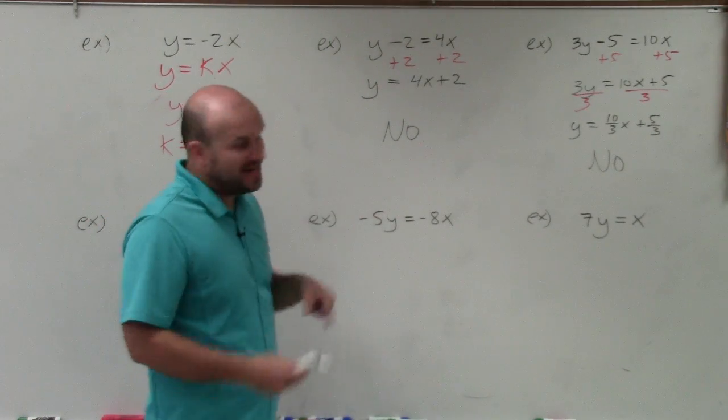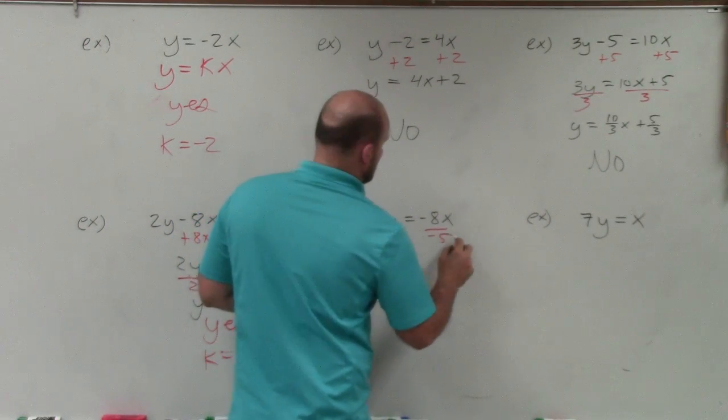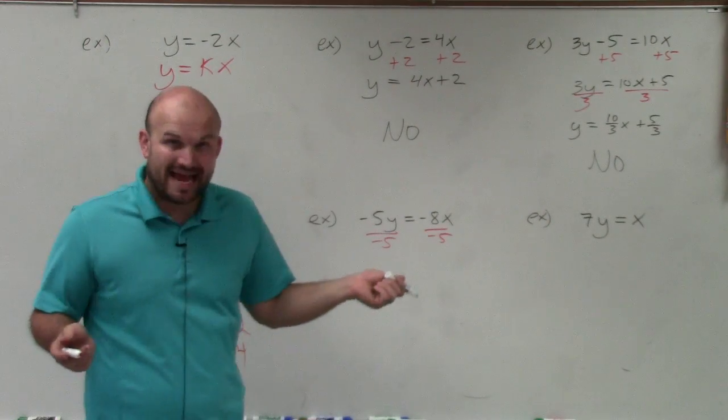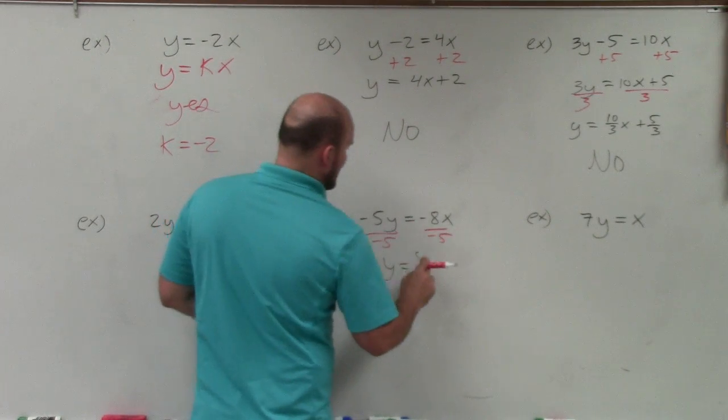In this example here, I just have my y's being divided by negative 5. So I divide by negative 5. Well, negative 5 does not divide into 8, but that's OK. We can have our constant be a fraction. My negatives go to a positive.